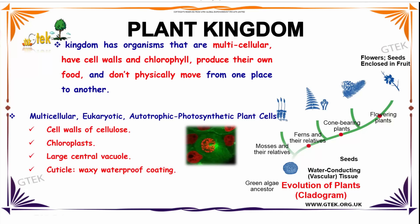Plant Kingdom is nothing but a kingdom that has organisms that are multicellular. It has cell walls and chlorophyll. It produces their own food and does not physically move from one place to another. The multicellular eukaryotes and autotrophs are all called photosynthetic plant cells.